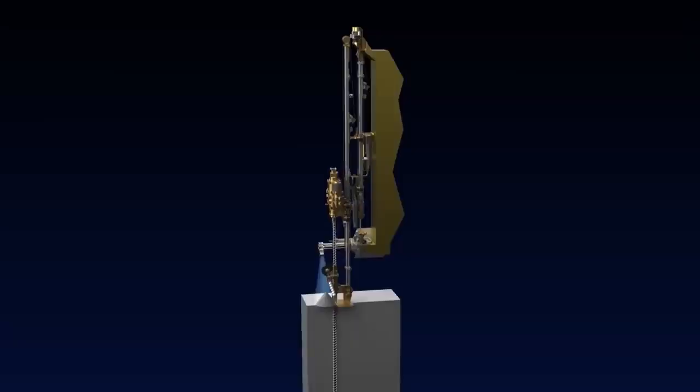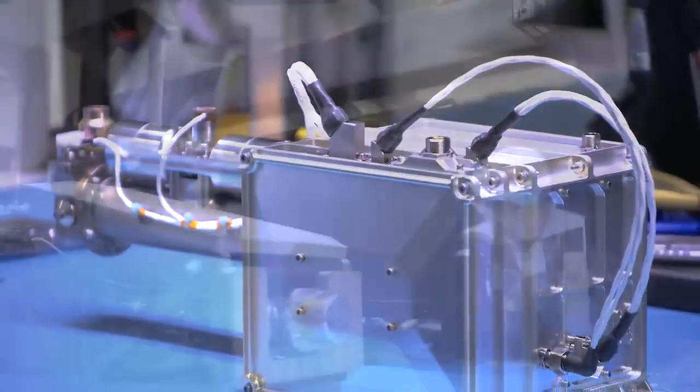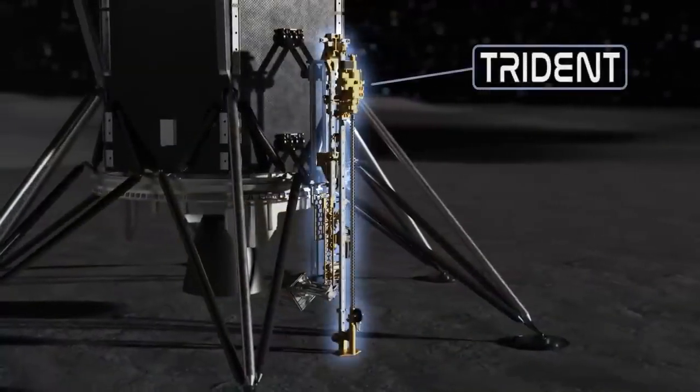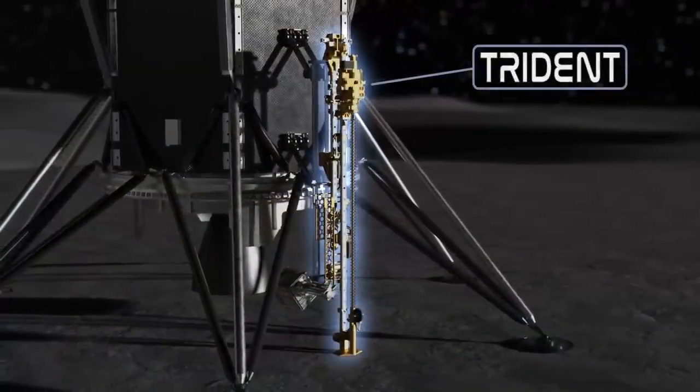PRIME 1 is intended to drill for water on the lunar surface. PRIME 1 is the combination of two instruments: a drill built by Honey Bee Robotics called Triton, which stands for the Regolith Ice Drill for Exploring New Terrain,